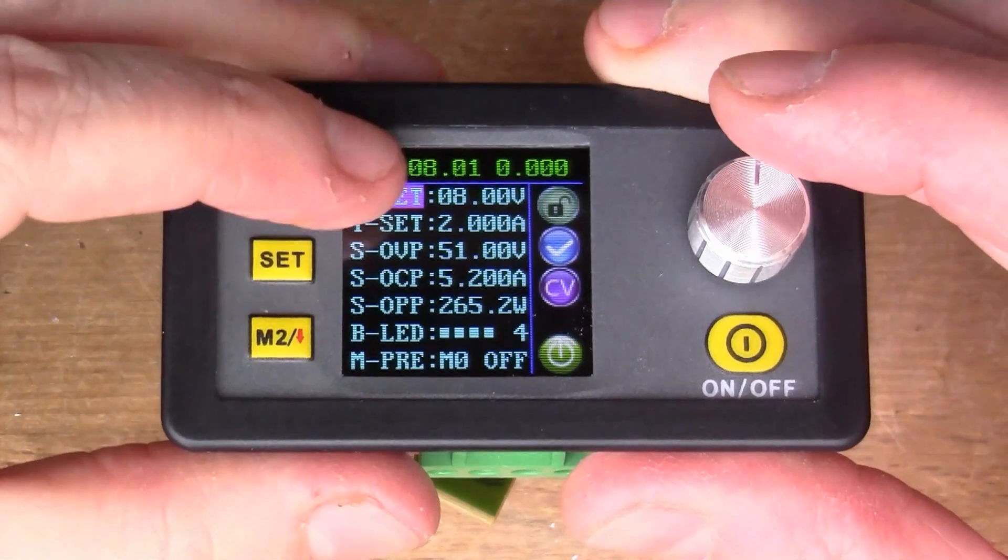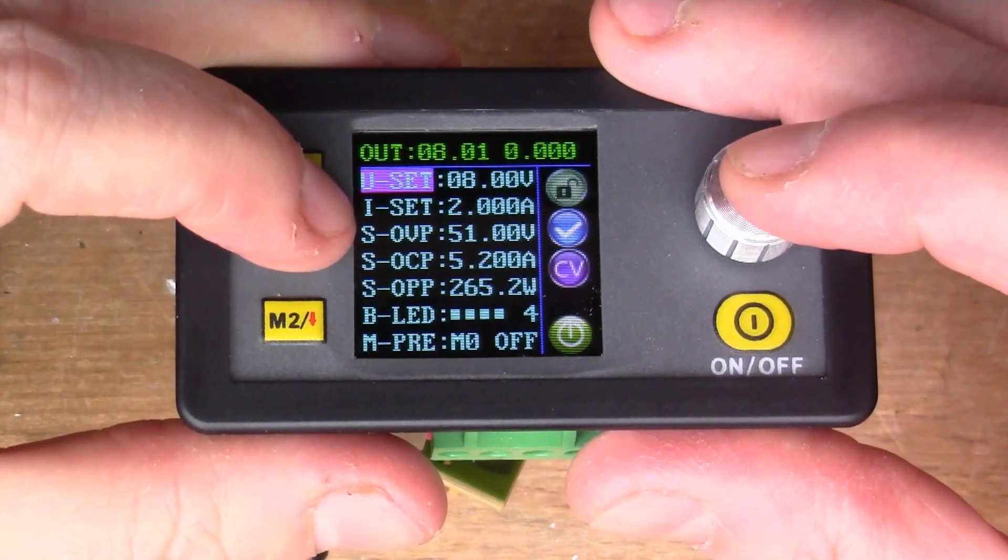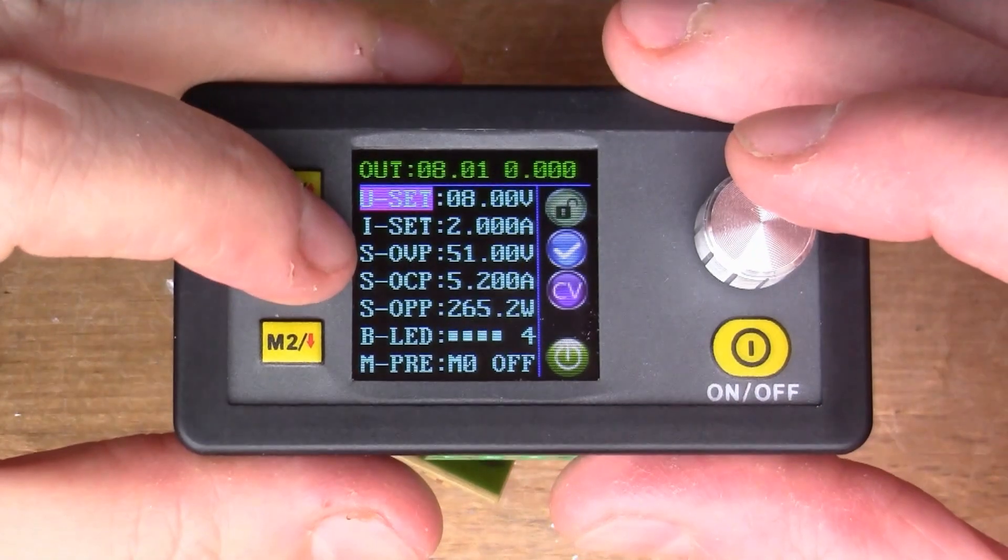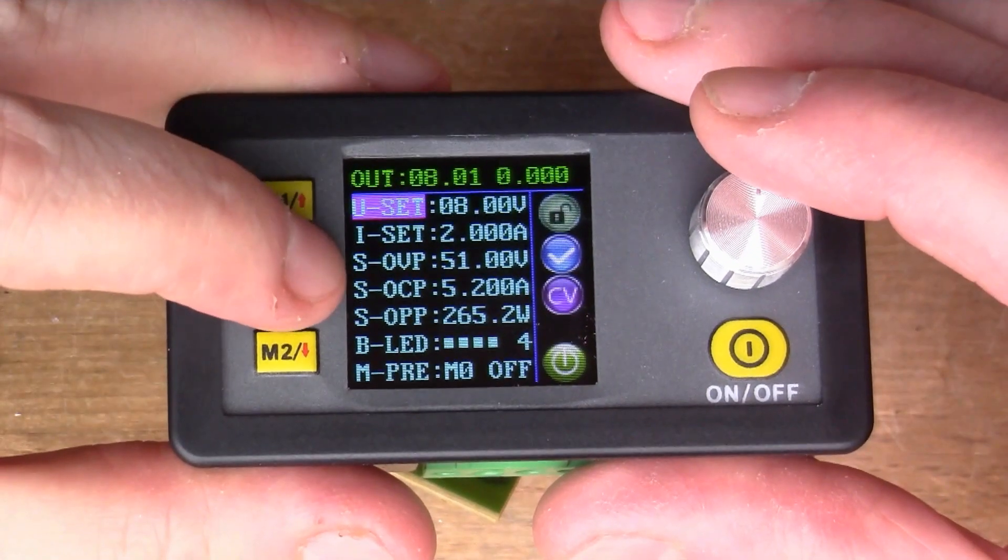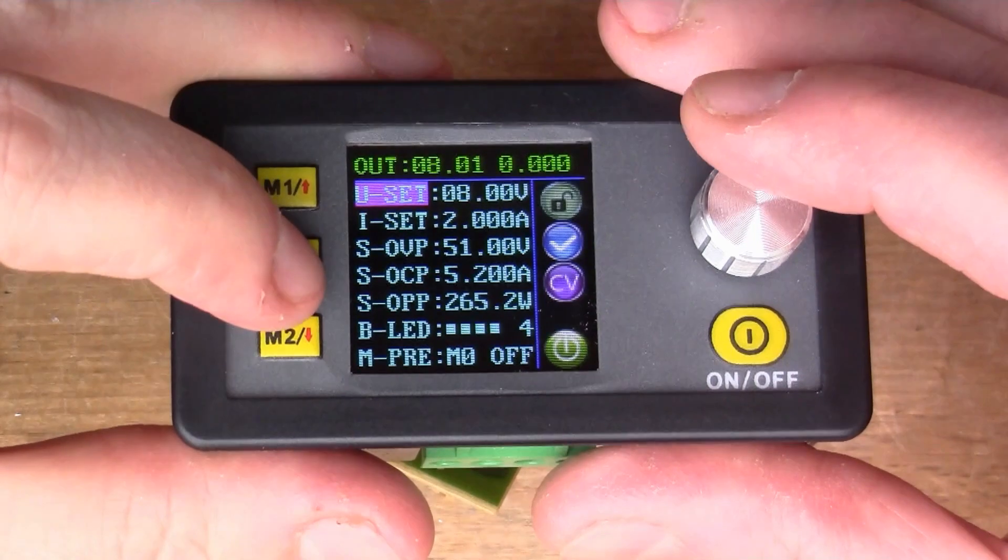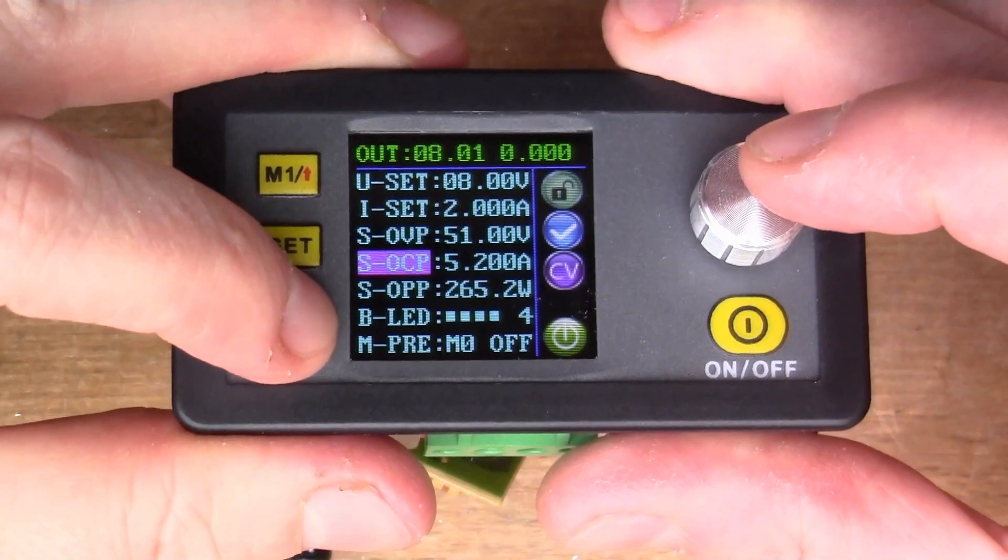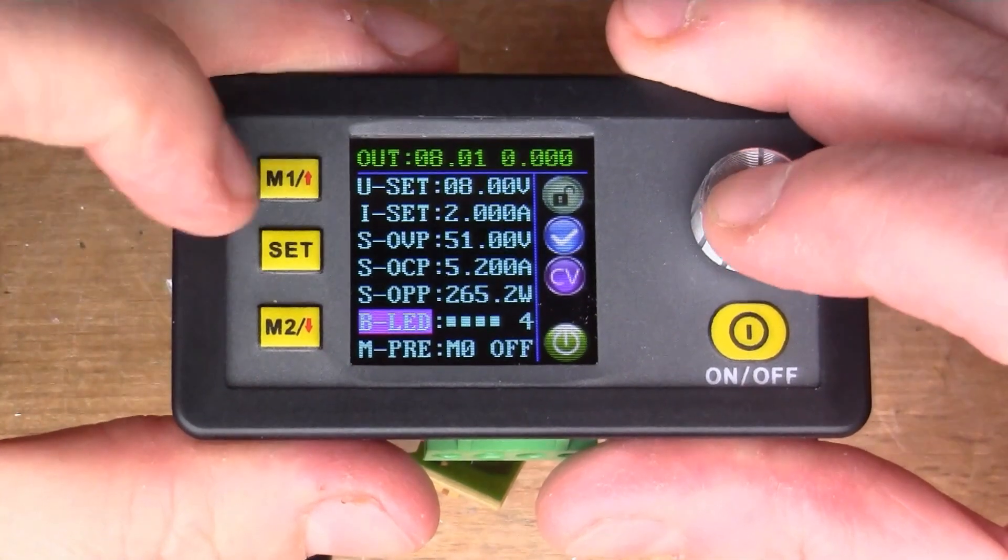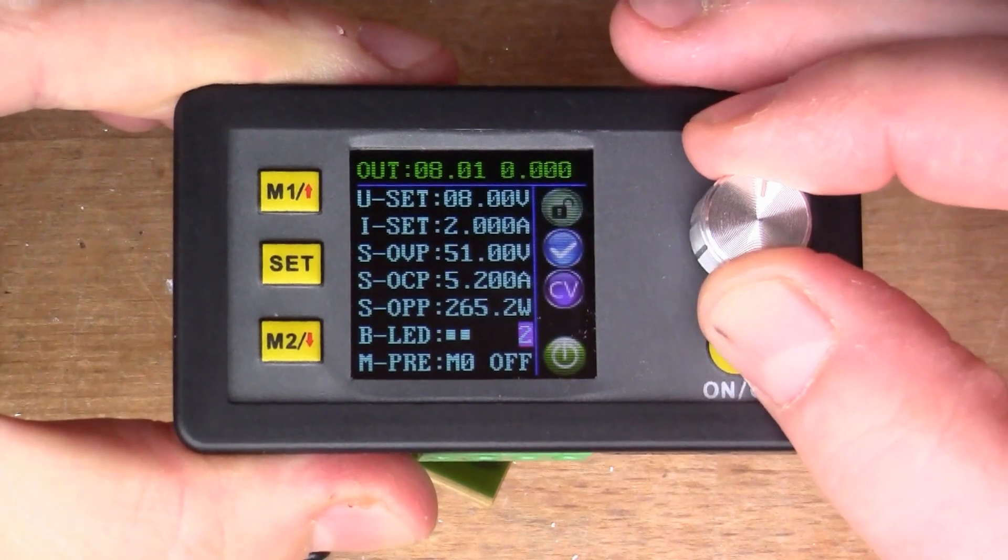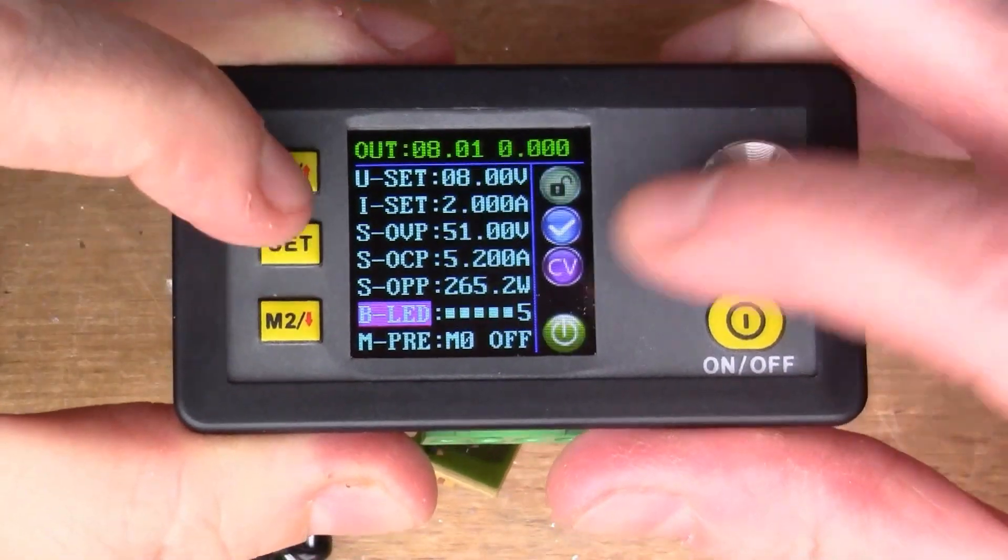What you can also do if you hit set twice, you're in this mode here. So you can set various things. So there's the voltage, the current, and then these are overload settings. So I think you can limit, I've never used this, but I think you can limit the power or the voltage or the current using this. And then down the bottom there, these work as cursor keys by the way in this mode. So we've got this one here which is brightness. So I can change the brightness of the display like that. Put it on max I think. Like that.